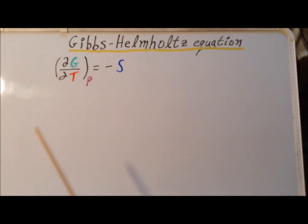We recall that the partial derivative of G, the Gibbs energy, with respect to the temperature at constant pressure is minus the entropy. To see where we derived this particular result, please see this video.